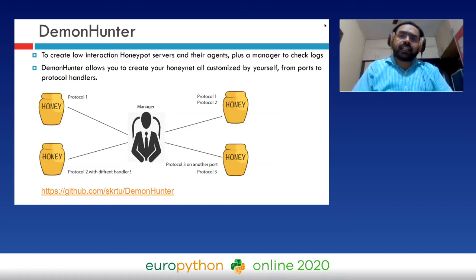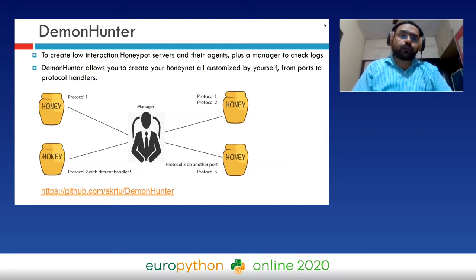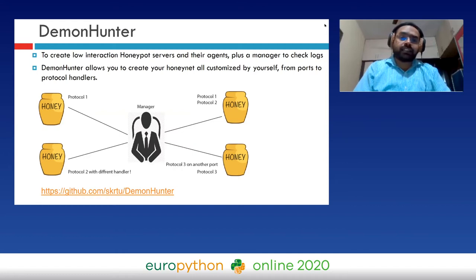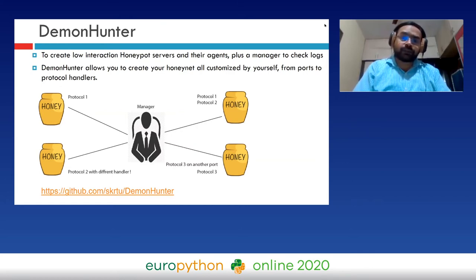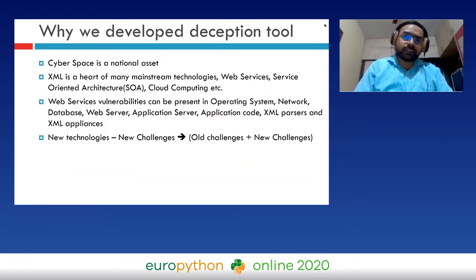The next tool is Demon Hunter, used to create low-interaction honeypot servers. It has agents and a manager to check logs, and allows you to create your own customized honeynet — from ports to protocol handlers. You can use your own port numbers and different protocols. Centrally there is a manager component that manages honeypot devices, protocols, and port numbers. The protocols can be of different natures: combinations of HTTP, UDP, SMTP, FTP, etc.